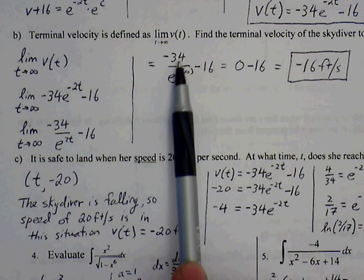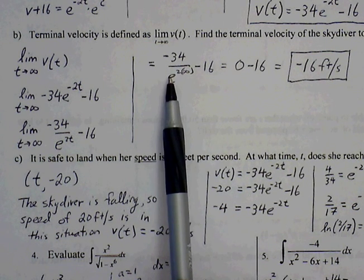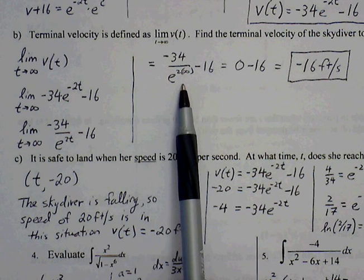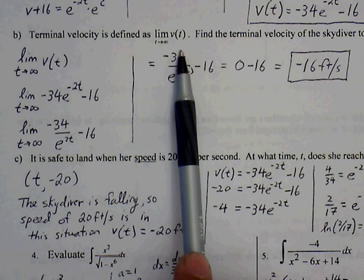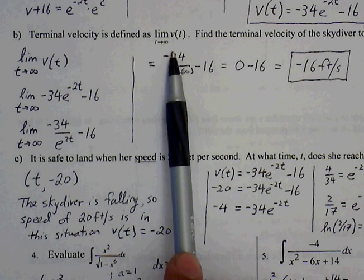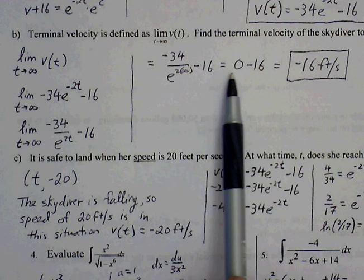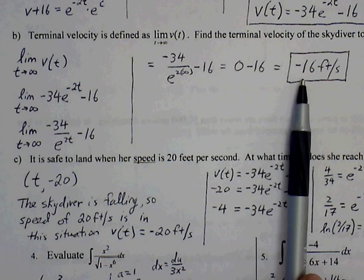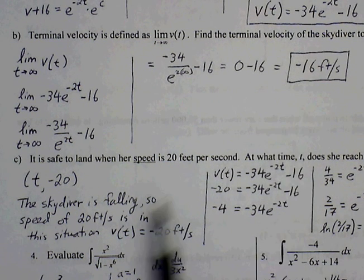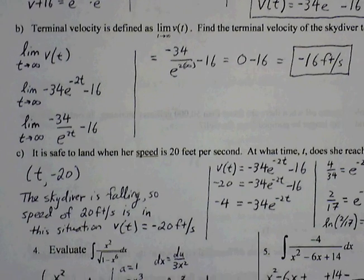So what's negative 34 over infinity going to be? This fraction is going to get smaller and smaller because this denominator keeps increasing. So eventually, this fraction will just eventually go to 0. So then 0 minus 16 will simply just be negative 16 feet per second.